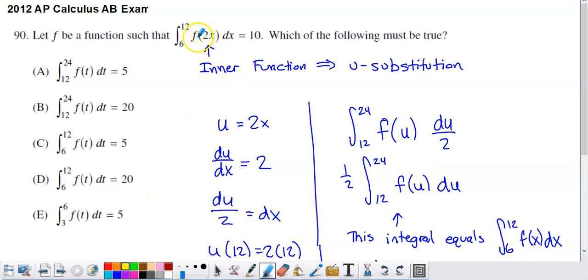What I notice about this expression right here is I notice an inner function. I don't just have x inside this function. I have 2x. So anytime you're doing a definite integral by hand and you see an inner function, the option that you should hopefully consider right away is to try to carry out a u substitution. So if I try to let u equal that inner function, u is going to be equal to 2x.